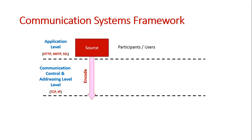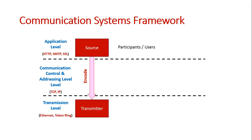The message is now encoded but still hasn't been sent yet. At the transmission layer level, which is the third level, is when the message is actually sent and transmitted around the network. Different protocols are used depending on the network topology — if it is a ring topology, a token ring protocol would be used; otherwise, for a bus topology, an Ethernet protocol would be used.